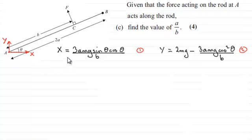We found out in part B that X equals 3amg sin theta cos theta divided by B, and the Y component was 2mg minus 3amg cos squared theta divided by B. And now we're told that given that the force acting on the rod at A acts along the rod, find the value of A divided by B for four marks.